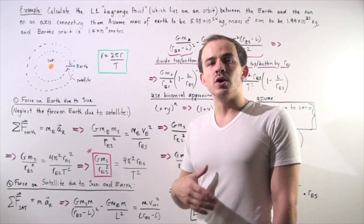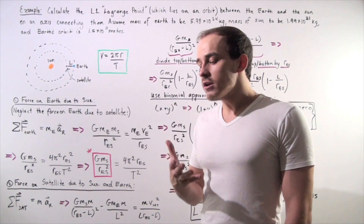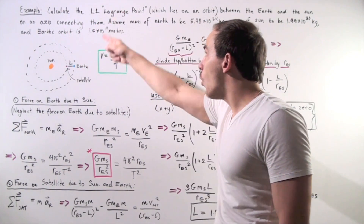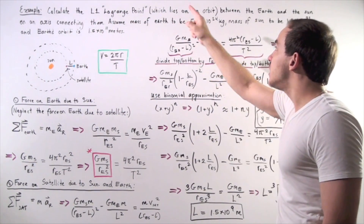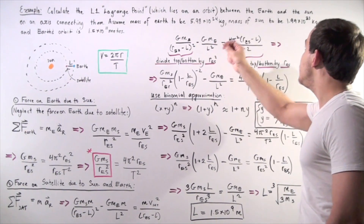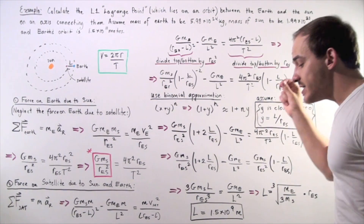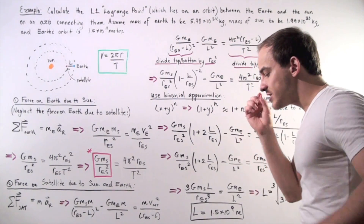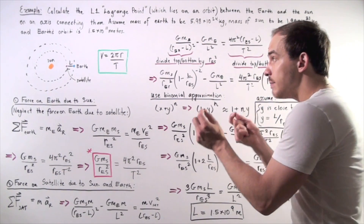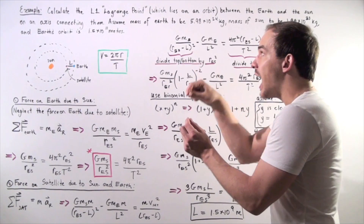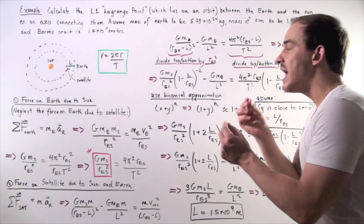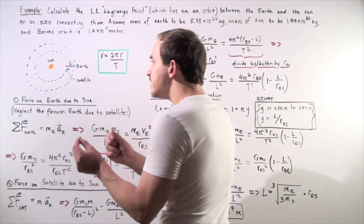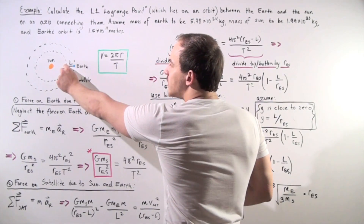So let's suppose we want to calculate one of these Lagrange points. We want to calculate the L1 Lagrange point, which lies on an orbit between the Earth and the Sun on an axis connecting the Sun and the Earth. We want to calculate the distance between our satellite found on the L1 Lagrange point and the Earth, and let's suppose this distance is given by the capital letter L.